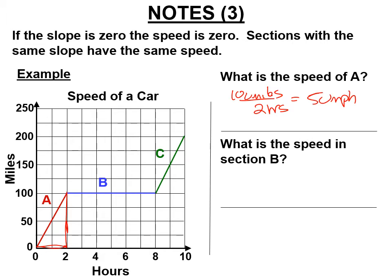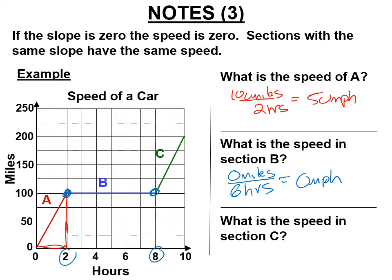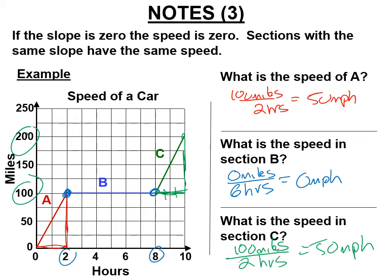Section B: it starts at 100 and ends at 100, so it went zero miles during that time — zero miles in six hours (from hour 2 to hour 8). That's zero miles per hour. In section C, it went from 100 to 200 — another 100 miles in two hours — so it's going 50 miles per hour again. Sections with the same slope have the same speed; sections A and C are parallel to each other, so the car is going the same speed.